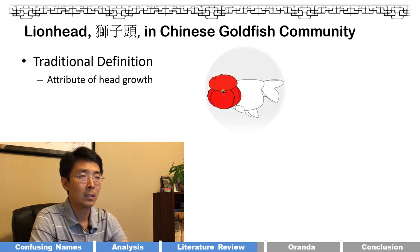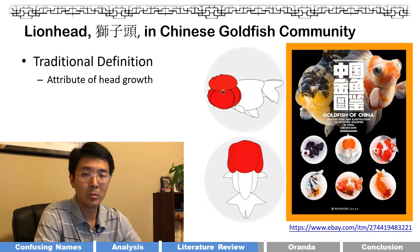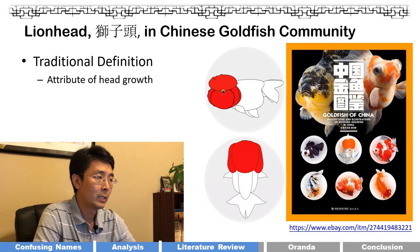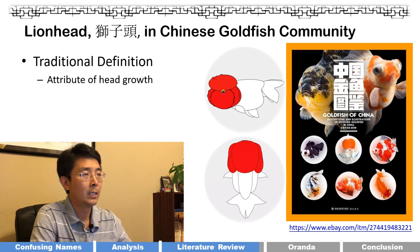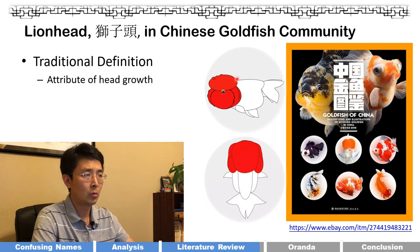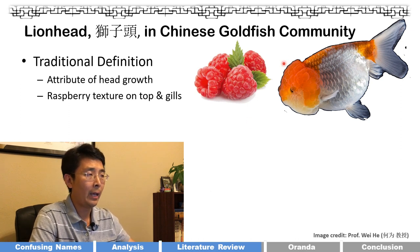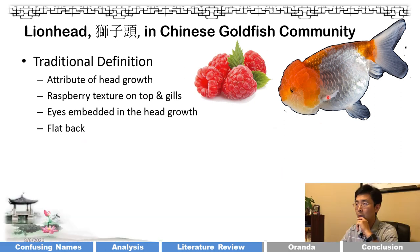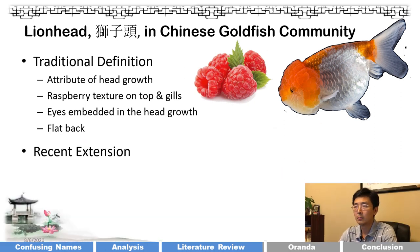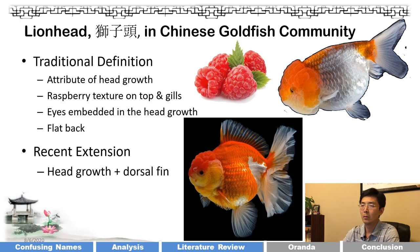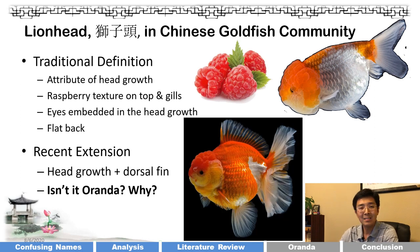The first school is the traditional definition: lionhead is basically an attribute of head growth — no dorsal fin, massive head growth with raspberry texture and many small cysts around the head, eyes embedded in the growth, and a relatively flat back. This is a recent Chinese goldfish publication. The modern concept extends this: lionhead equals head growth plus dorsal fin — which sounds like an oranda. So why is there a shift from 'egg fish with head growth' to 'oranda' in the modern Chinese goldfish community?